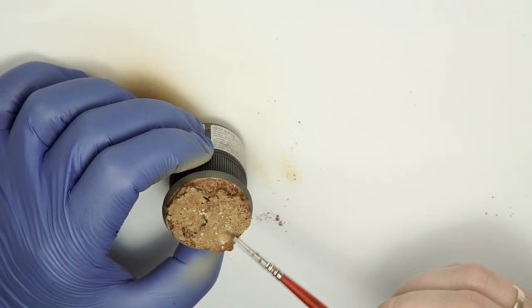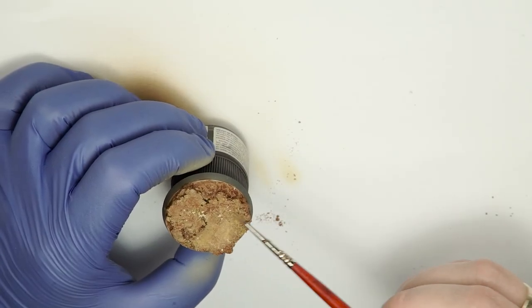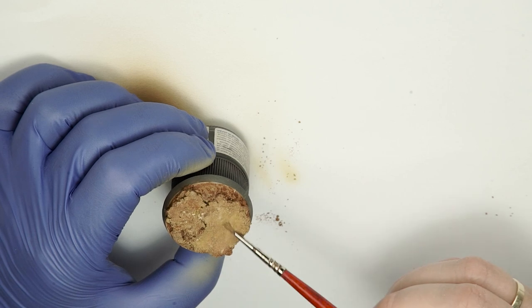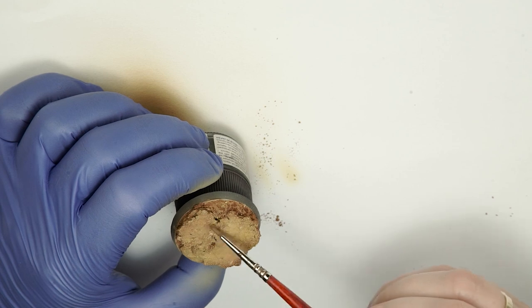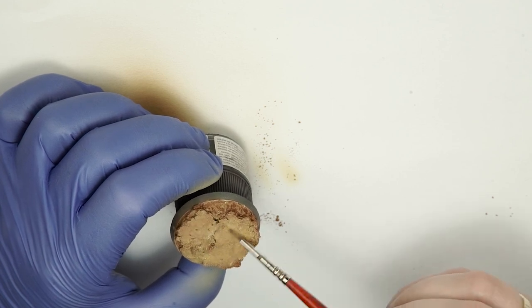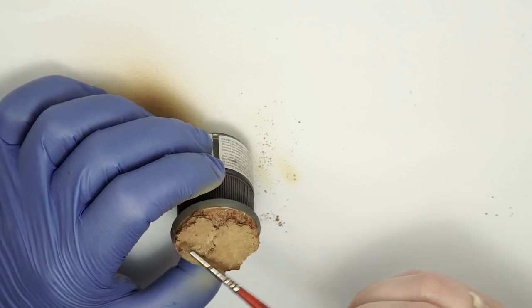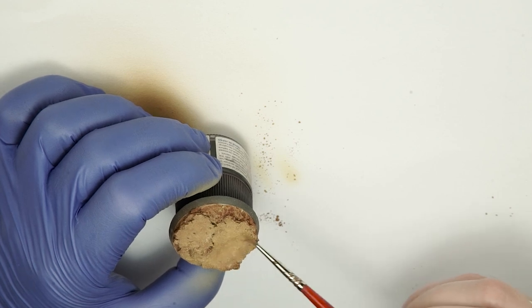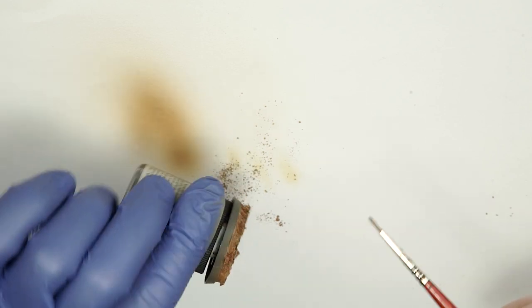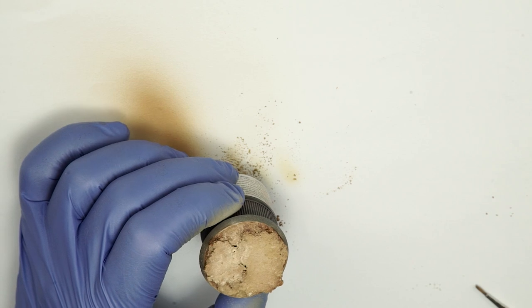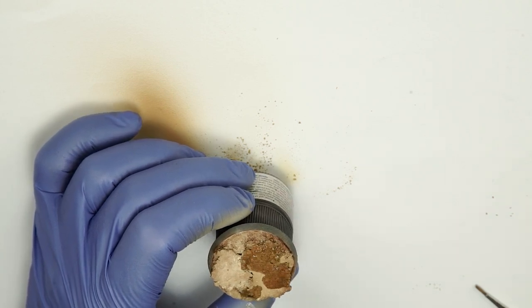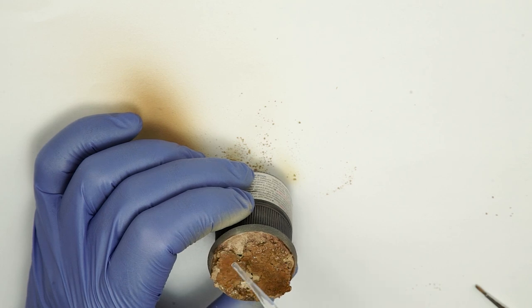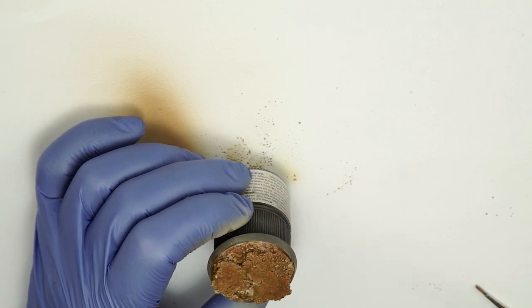Then the mid tone. After that with an old brush I am going to blend all the pigments together. To fix everything to the base just put a few drops of pigment fixer and let it dry or use a hair dryer to speed up the drying time.